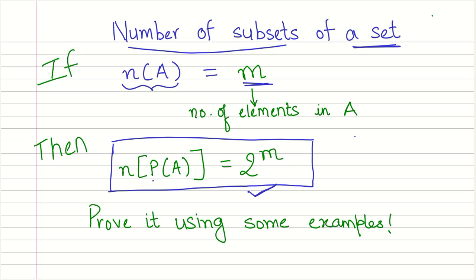So for example, if you have a set A where the number of elements in set A is equal to three, then the number of elements in the power set of A is going to be equal to 2 to the power 3, that is equal to 8.